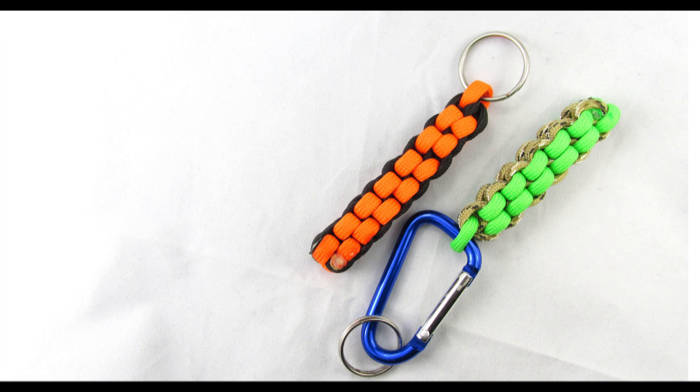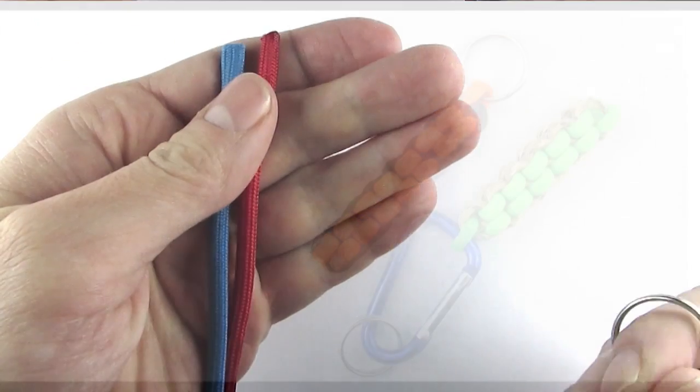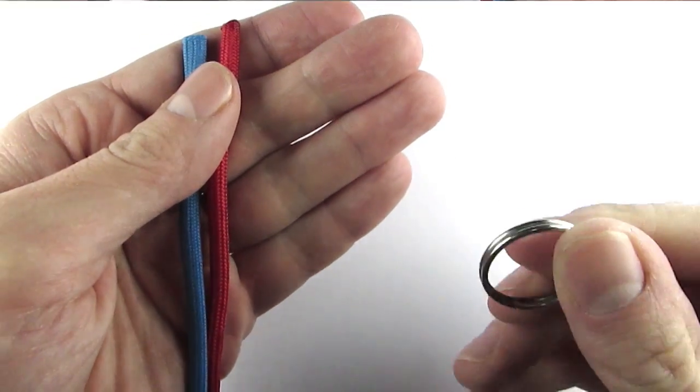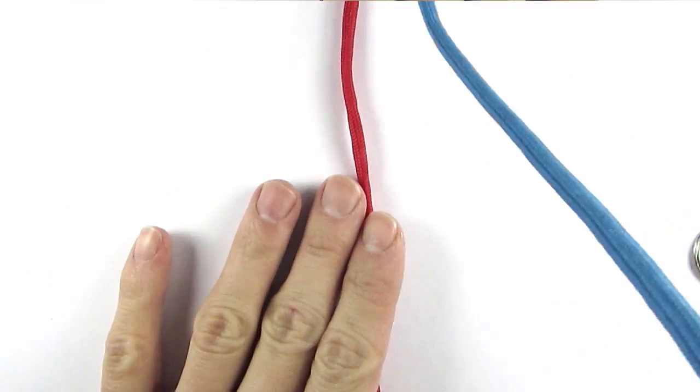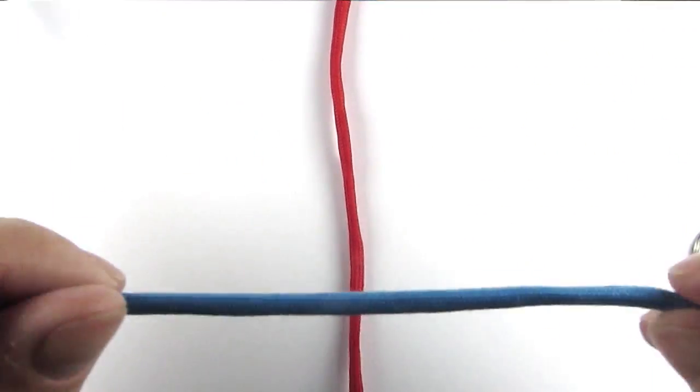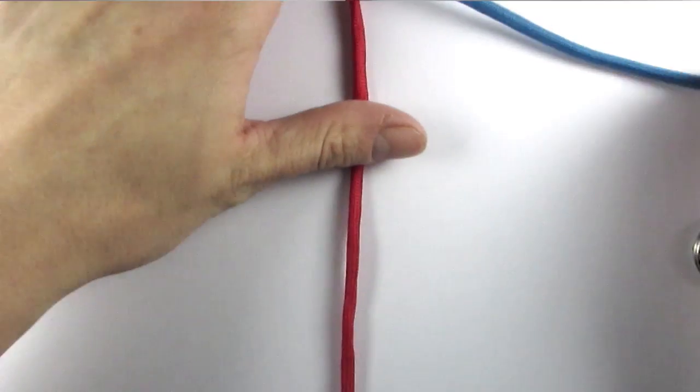Now what you're going to need for this project is two pieces of paracord as well as a keyring. The first thing we're going to do is we're going to cross our cords like we did in the tutorial.